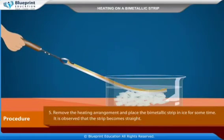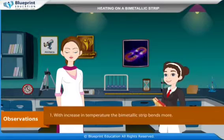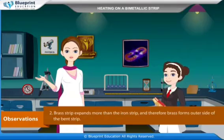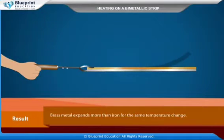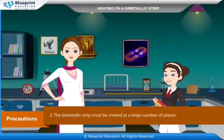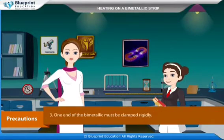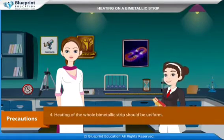The metal which forms the upper part has a larger coefficient of linear expansion. Remove the heating arrangement and place the bi-metallic strip in ice for some time — it is observed that the strip becomes straight again. Observations: with increase in temperature, the bi-metallic strip bends more; the brass strip expands more than the iron strip, and brass forms the outer side of the bent strip. Result: brass metal expands more than iron for the same temperature change. Precautions: the length of the bi-metallic strip should be large compared to its width or thickness; it must be riveted at a large number of places; one end must be clamped rigidly; and heating of the whole strip should be uniform.